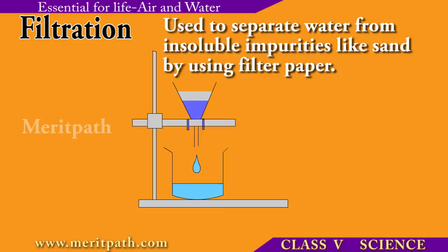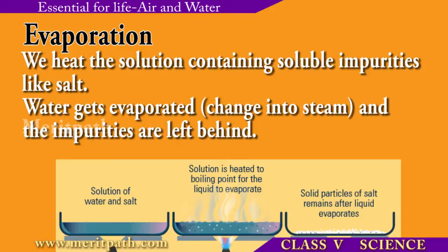Filtration is the process by which insoluble impurities like sand are filtered using a filter paper. Like we remove insoluble impurities, we can also remove soluble impurities by evaporation. When the solution containing soluble impurities is heated, water changes to steam and the impurities are left behind. This process is called evaporation.